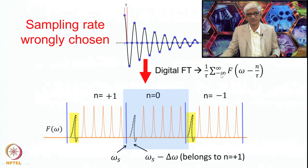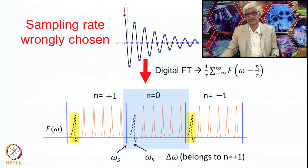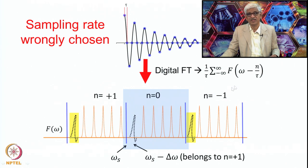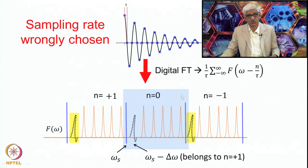From the digitization theorem, the result of a digital Fourier transformation is given by: 1 over tau times summation from minus infinity to infinity of F(omega minus N over tau), where N is the running index. You get a series of spectra — F(omega) is your spectrum, and you get as many sets of such spectra as there are N values. We always choose N equals zero; for N equals zero you have F(omega). The range from here to here is one F(omega), and each adjacent copy is separated by 1 over tau.